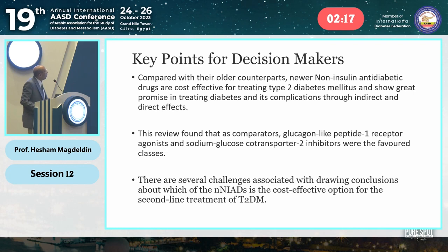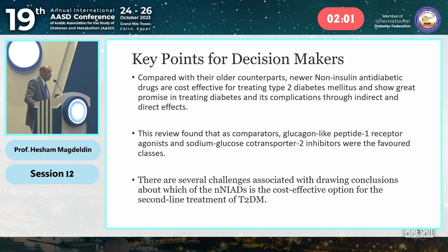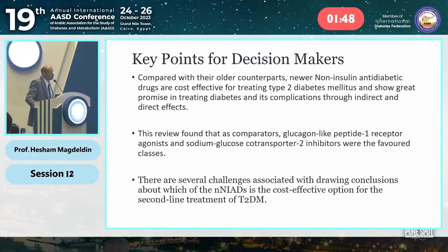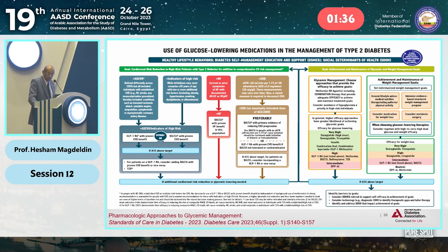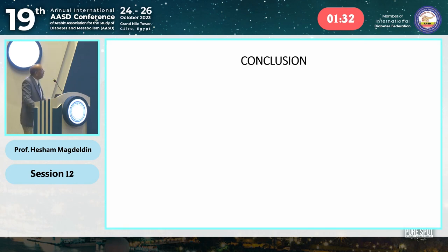The key point for decision-makers is that compared to older comparators, newer non-insulin anti-diabetic drugs are cost-effective. This review found that GLP-1 receptor agonists can differ in benefit across different patient types — this is precision medicine. Genetic background is now being analyzed to check which patients benefit more from which treatment. The ADA recommendations now place these newer, more expensive drugs at the front of treatment because they cost less from a morbidity perspective.